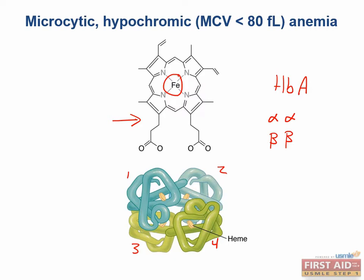There is normally a small fraction of hemoglobin A2, consisting of two alpha and two delta subunits. There is also a small component of hemoglobin A1C, which is essentially normal hemoglobin A that has had glucose added through a non-enzymatic glycosylation. If you have elevated blood glucose — as in diabetes — your hemoglobin A1C will directly correlate. Since hemoglobin lasts about 120 days, A1C serves as an indicator of average blood sugar over the last three months.